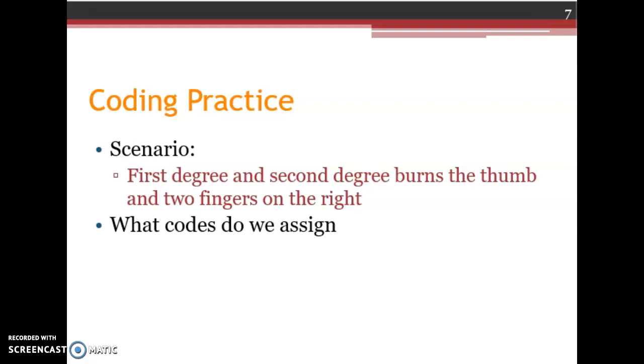Now, let's go to a coding practice. In this scenario, we have a first degree and second degree patient with burns on the thumb and two fingers on the right hand. So, what codes do we assign? The site of the burns is the thumb and the fingers. And because we have first degree and second degree at the same anatomical site, we only code the more severe. So, we're only going to code the second degree because the first degree is inherent. Open up your index and go to B to burn. Once you get to burn, we're going to go to finger with thumb, and then we select right because it's on the right hand. From there, we're going to pick second degree, and we get T23.241.